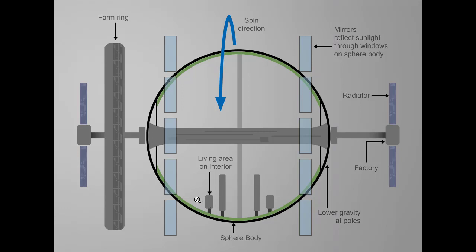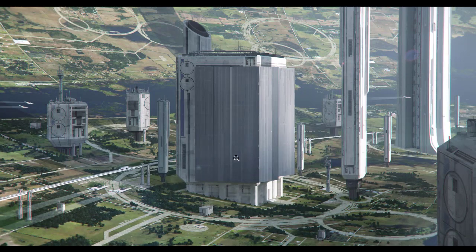Gravity gets kind of weird as you start heading up towards the center area — it becomes less and less. Basically what you have is a bunch of buildings and then this hill that kind of sweeps upwards. You've got your buildings and then the land and everything sweeps up in this direction as you get closer and closer to the center line of the sphere.